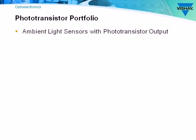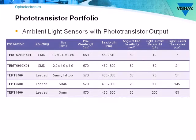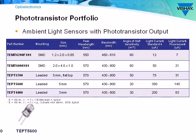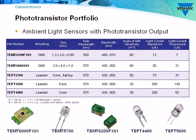Vishay offers phototransistor and photodiode-based ambient light sensors. The phototransistor portfolio includes leaded and surface mount devices, all with a peak sensitivity from 550 to 570 nanometers — nearly equivalent to our eyes' peak sensitivity. Part numbers with an F contain an infrared filtering epoxy to further improve performance. Part numbers with an X01 are qualified to the AEC-Q101 standard and support operating temperatures from minus 40°C to 110°C.